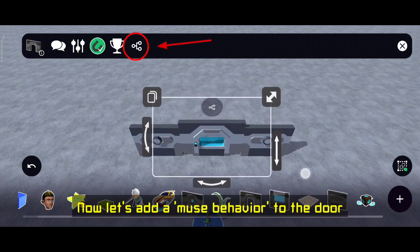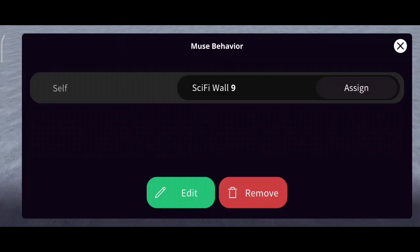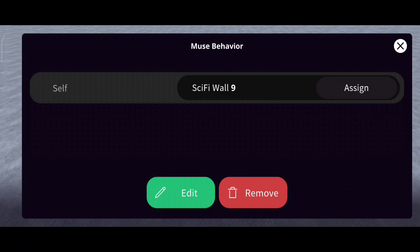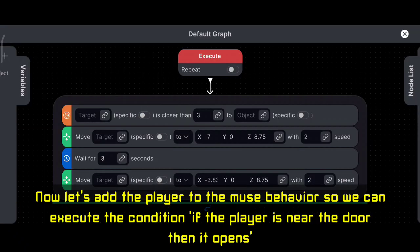Now let's add a muse behavior to the door. As you can see, your door is assigned as self. Now let's add the player to the muse behavior so we can execute the condition if the player is near the door, then it opens.